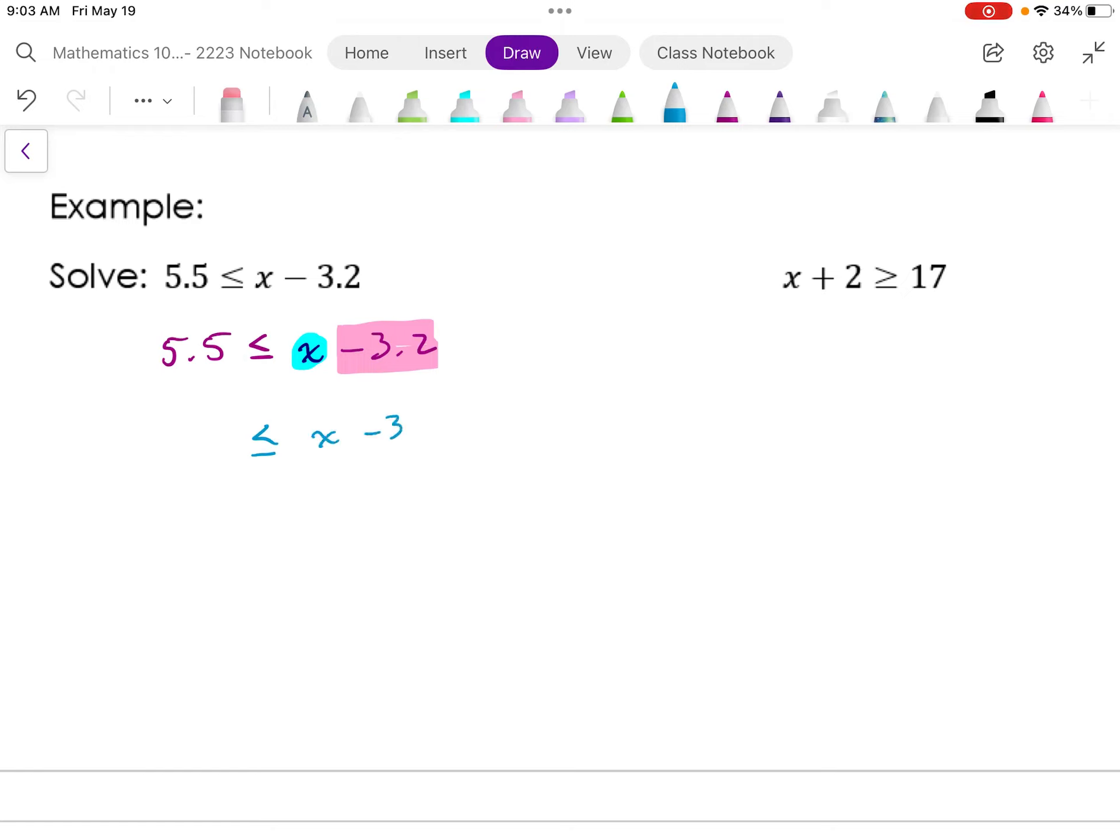Me personally, I always enjoy thinking about the inverse. How do I undo a subtraction of 3.2? I add 3.2 to both sides. And that doesn't change my inequality sign.